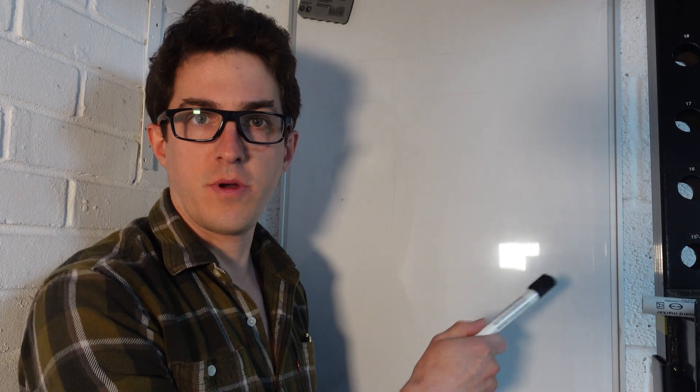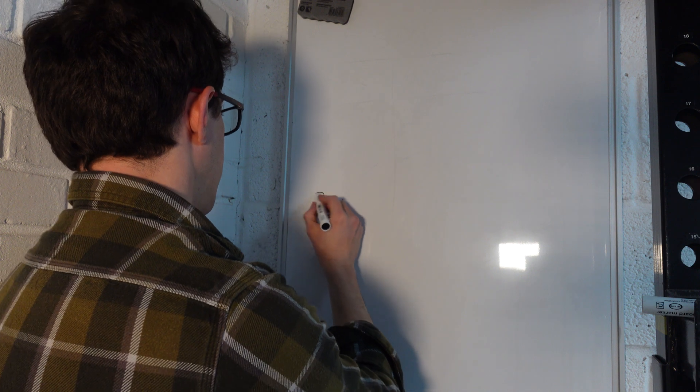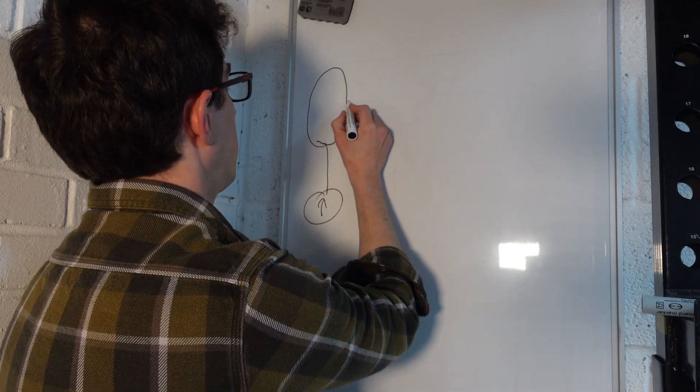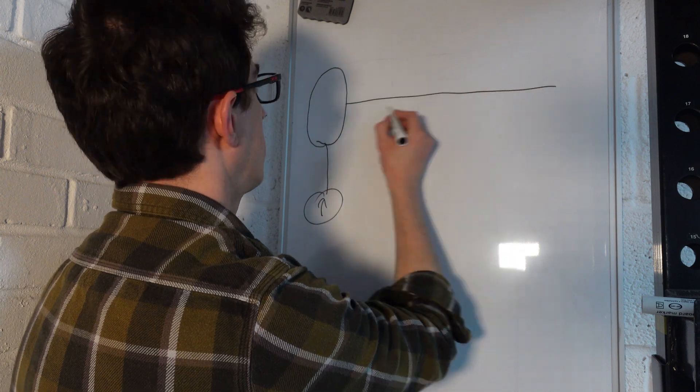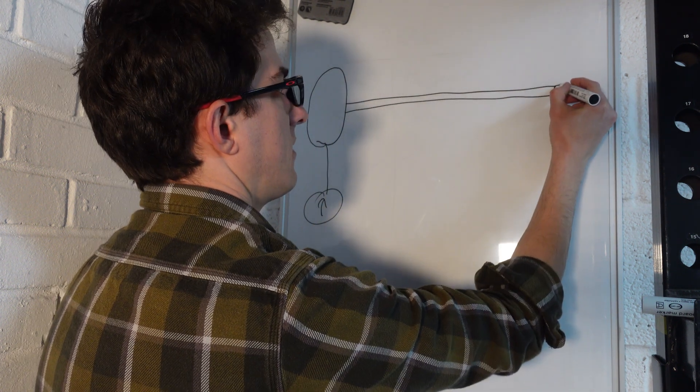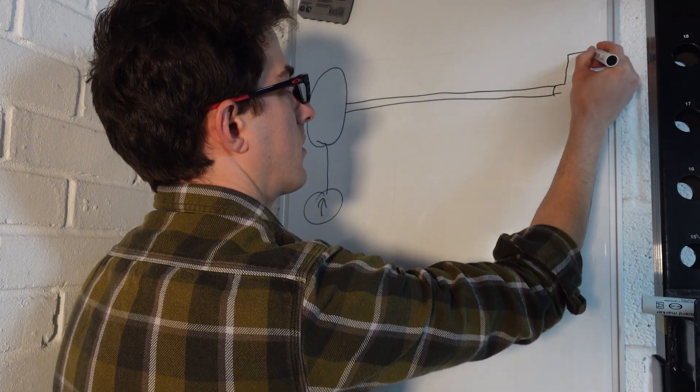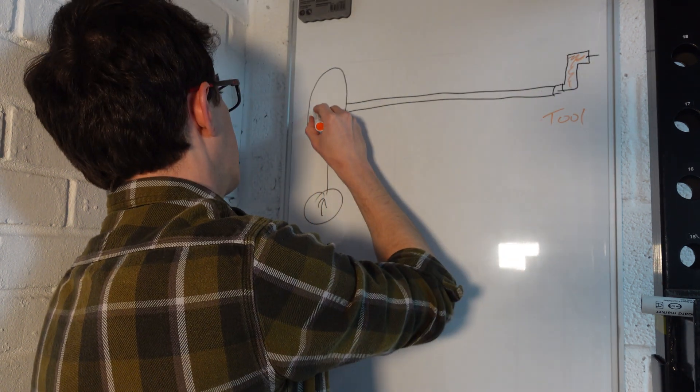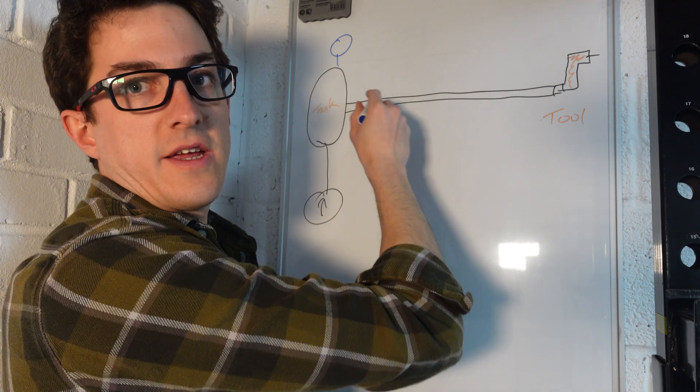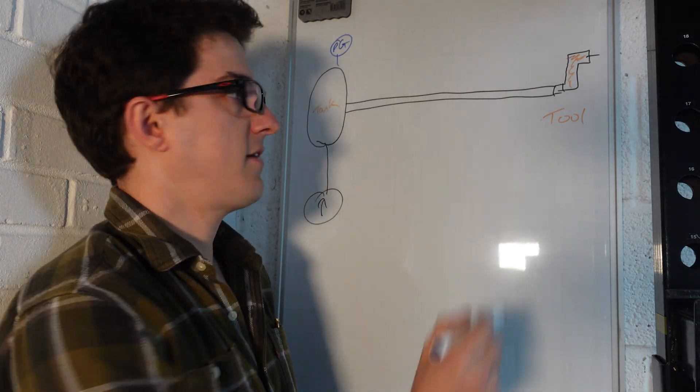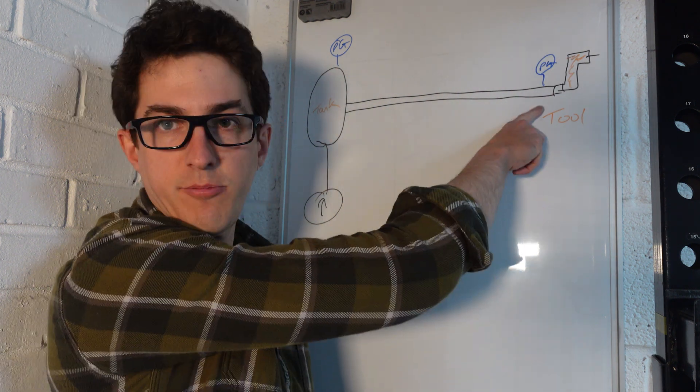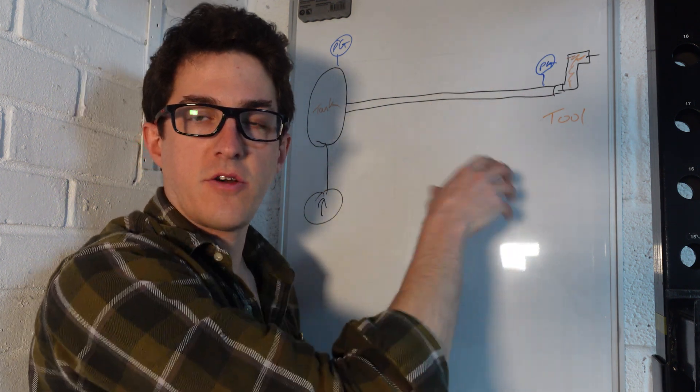Your compressor here goes up to your reservoir. You've then got a pipe and then on the end you've got your tool. So on the tank you've got a pressure gauge and let's say hypothetically you've got a pressure gauge here at the tool.